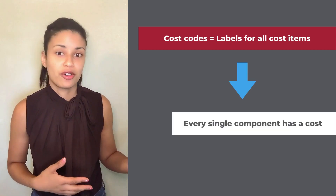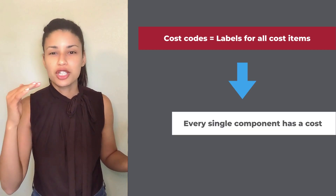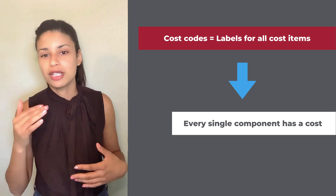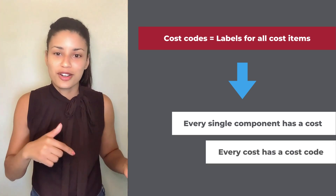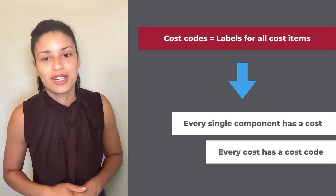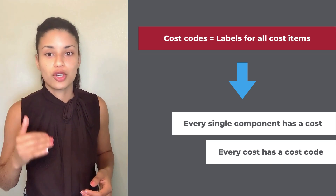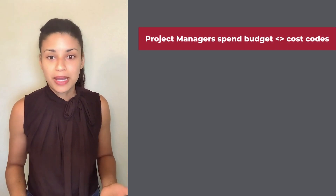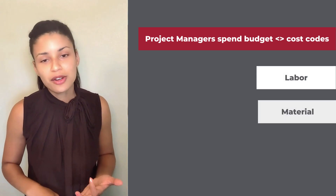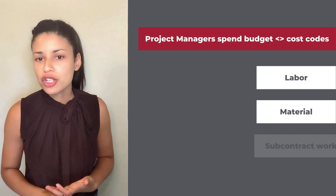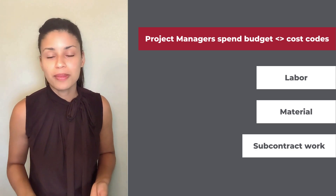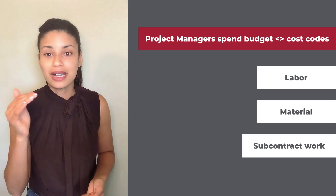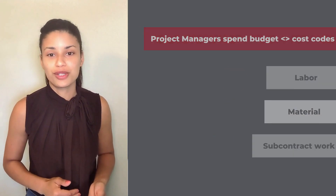An estimator would have assigned how much money he or she thinks is going to be spent on all of these different cost codes. Then here comes the project manager with a budget for all of these cost codes. The project manager then starts spending it on labor, material, and subcontracting out some of the work, and all the money being spent is being categorized into each of these cost codes.